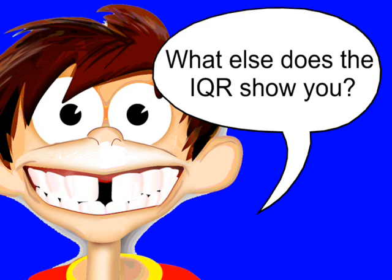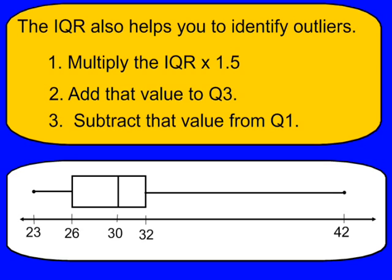So what else does the IQR show you? Well, one thing it can do is help you to identify if there are any outliers in your data. And again, remember, an outlier is a piece of data that is pretty far from all the other data. So first let's find out what the IQR of this box plot is. So here's our middle 50%. And if you take the third minus the first quartile, we have an IQR of 6.